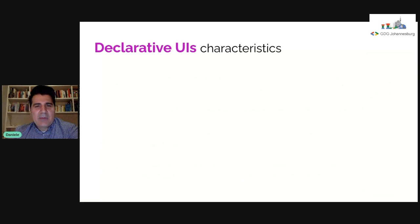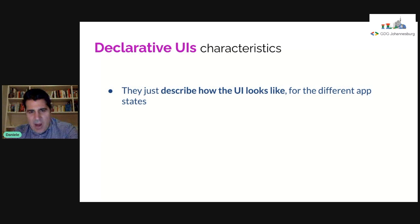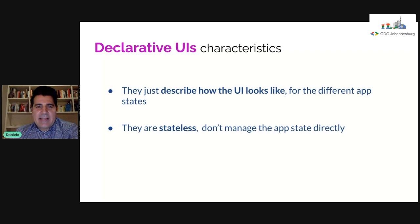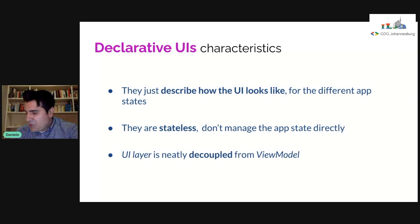Some characteristics of declarative UIs: they just describe how the UI looks for different app states, but they are stateless — they don't manage the app state directly. They achieve a very neat decoupling from the view model and from the data.